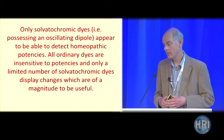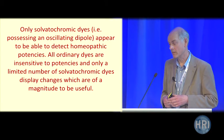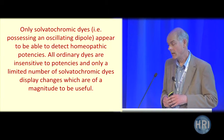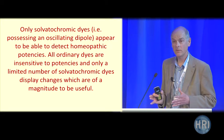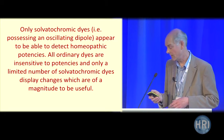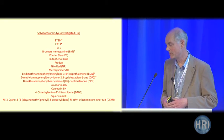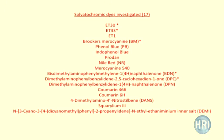Only solvatochromic dyes — those possessing an oscillating dipole — appear to be able to detect potencies. All ordinary dyes, and I've looked at many, are insensitive to potencies. And only a limited number of solvatochromic dyes display changes which are of a magnitude to be useful. There are 17 solvatochromic dyes examined so far, and the ones starred are those that produce a reasonable change in the presence of potencies, including some very exotic dyes used in lasers.